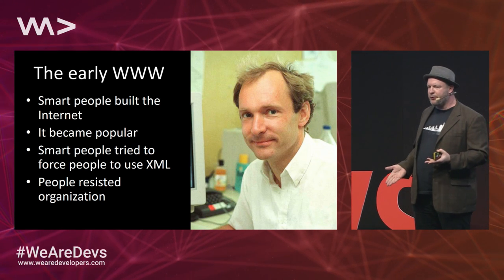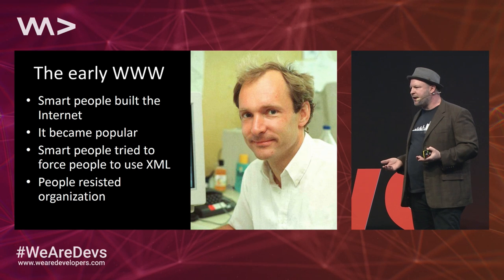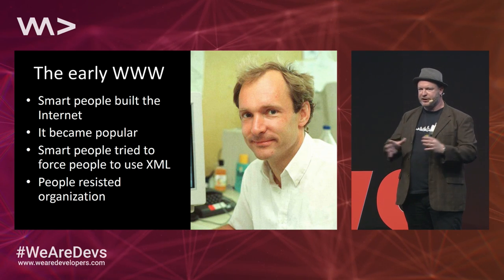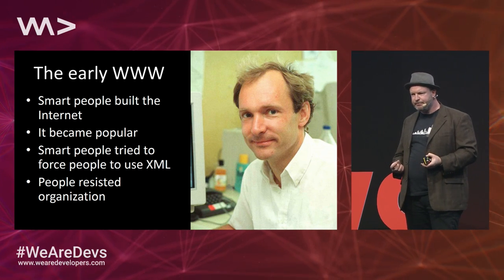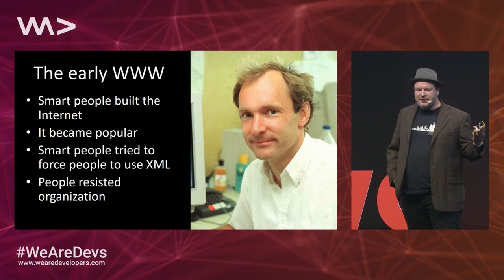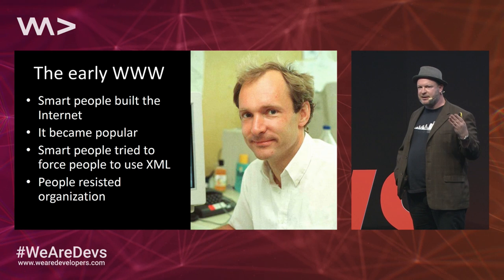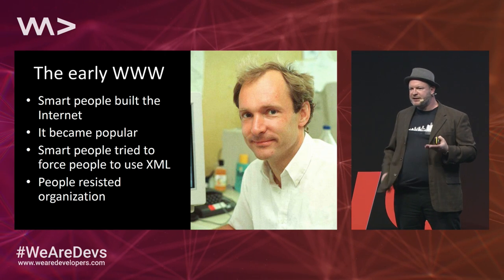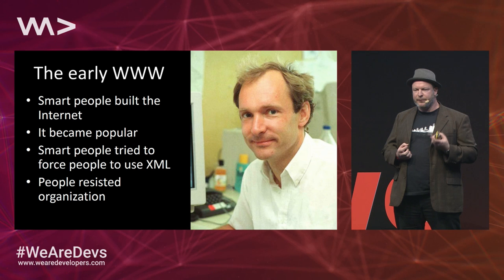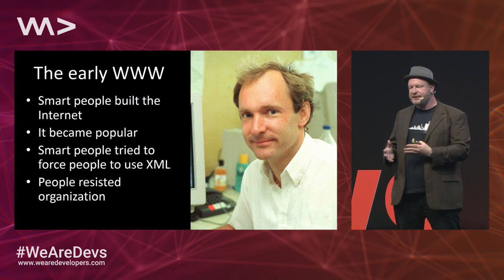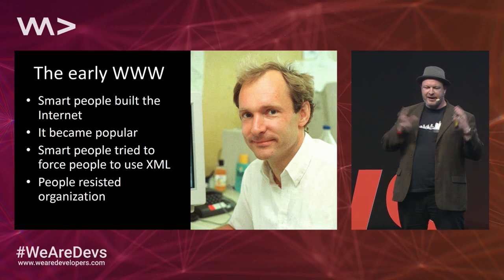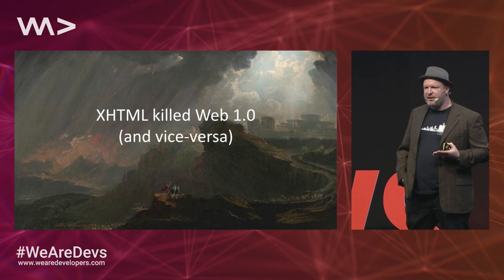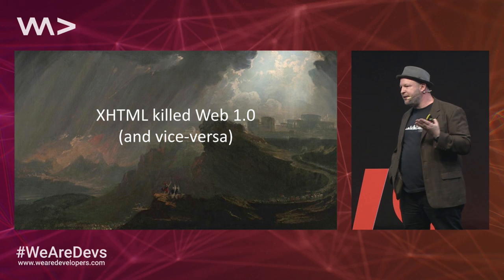Let's start with the early history of the World Wide Web. In the beginning, we had some really smart guys who came up with the internet, and some other really smart guys who invented a way for everybody to publish, and we had a content explosion. Then these other guys came along and tried to organize all of this — they created XML and XHTML, and people began to resist this. I think that was the biggest mistake of the early web. XHTML killed off what we now call Web 1.0, and it nearly killed the web itself.